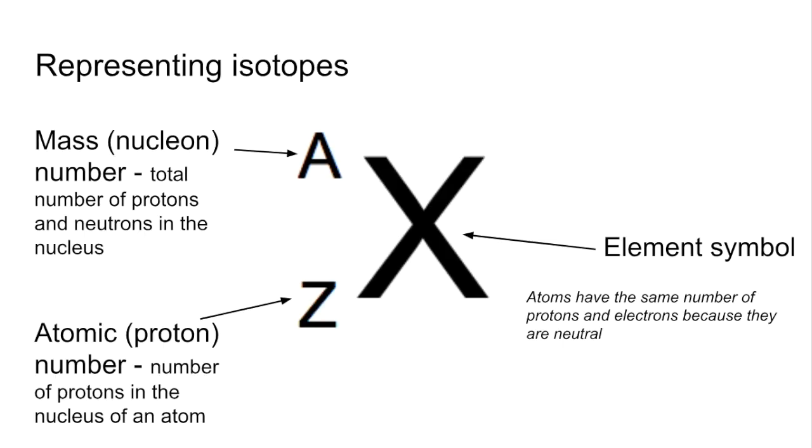That's obviously different for ions but we're going to come on to that. Since the protons and neutrons make up the mass of an atom, you can work out the number of neutrons by subtracting the Z, the atomic number, the proton number from the mass number. So A minus Z gives you the number of neutrons.